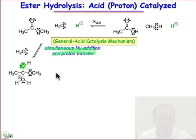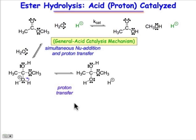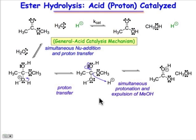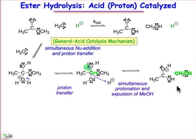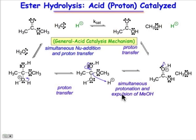If you get that step down, basically everything else that follows is straightforward. We're going to do a proton transfer to get a neutral intermediate. Then here's another key step of the general acid-catalyzed mechanism: we're going to do our beta elimination. Simultaneously, we will break the carbon-oxygen bond and pick up a proton to immediately get to a neutral methanol molecule. As another example of simultaneous protonation and expulsion of the methanol group, the proton transfer is only partial during the step — there's bond making to the proton while there's bond breaking between the leaving group and what will become the carbonyl carbon.